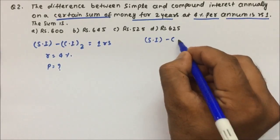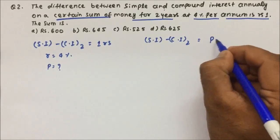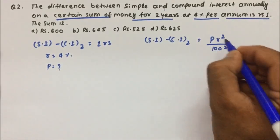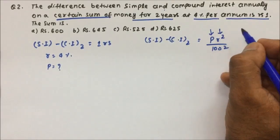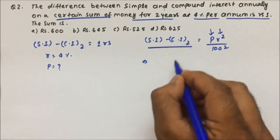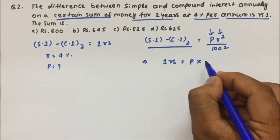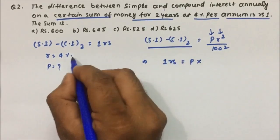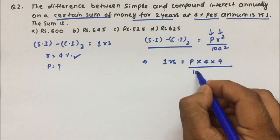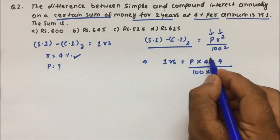There is a formula for the simple interest and compound interest difference for 2 years, which is P·r² divided by 100², where P is the principal and r is the rate. The difference is 1 rupee and we have to find the principal. Rate is 4%, so we substitute: 1 = P × 4 × 4 divided by 100 × 100.